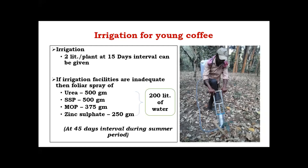If irrigation facilities are inadequate or there is a scarcity of water, we have an alternate method to overcome the problem of seedling death. A urea nutrient mixture spray — urea, SSP, MLB, and zinc sulfate at the rate of 500 grams, 375 grams, and 250 grams respectively — is mixed in 200 liters of water. This should be sprayed at 45-day intervals during the summer season, especially January, February, and March. This ensures better and proper establishment of the coffee plantations.